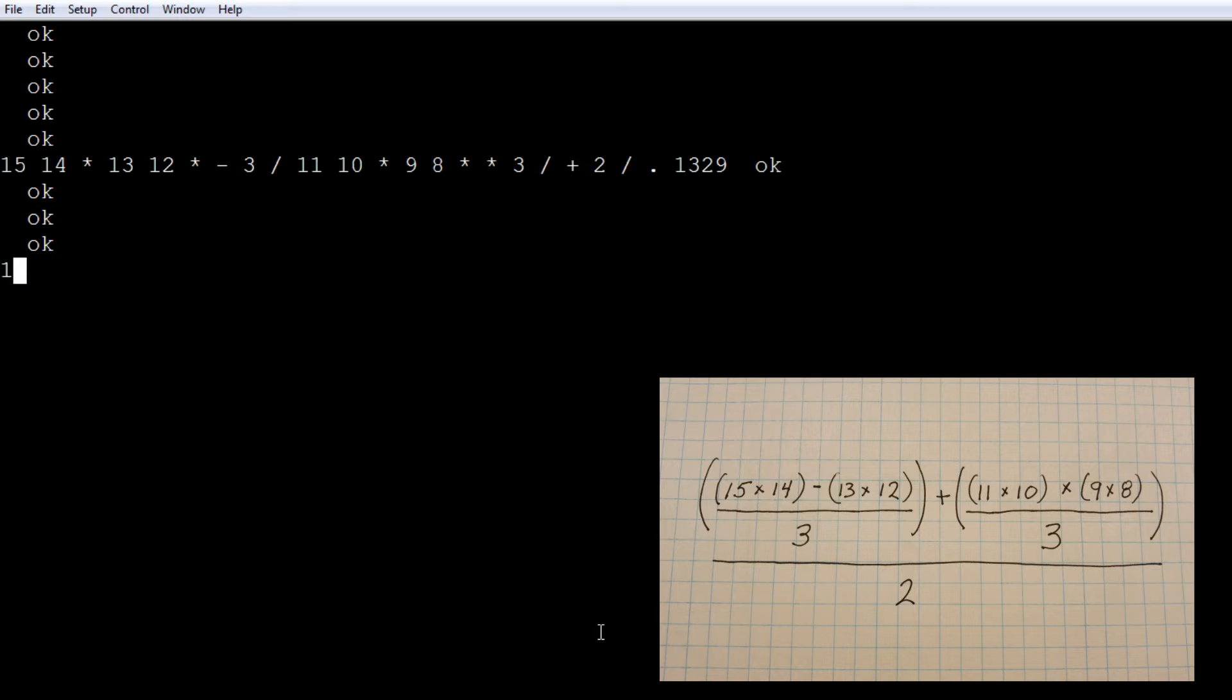So first of all we have 15 and 14 and we multiply that out and that's put on the stack. Then we multiply 13 and 12 and that's put on the stack. Then we subtract the 2. Then we divide by 3. Then we go over to the right hand side of the equation and we take 11 and 10 and we multiply that. That's put on the stack.